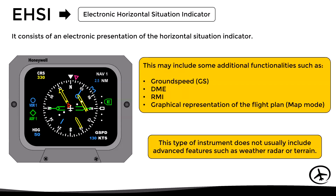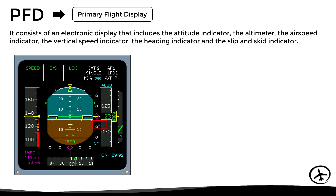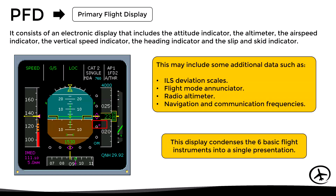In complete EFIS systems, we have the PFD, which stands for Primary Flight Display. It consists of an electronic display that includes several instruments such as the attitude indicator, the altimeter, the airspeed indicator, the vertical speed indicator, the heading indicator, and the slip and skid indicator. In addition to this, it may include some additional data such as the ILS deviation scales, a flight mode enunciator, a radio altimeter, and the frequencies for navigation and communication. This display condenses the six basic flight instruments into a single presentation, which is why it is called Primary Flight Display.